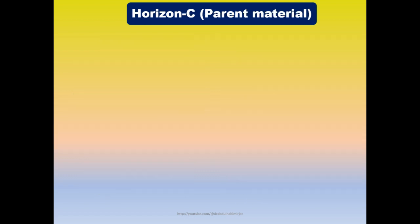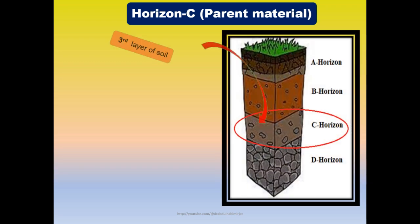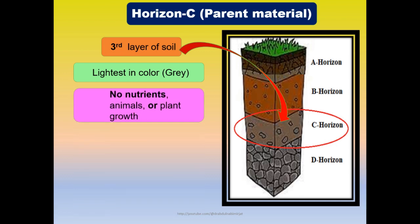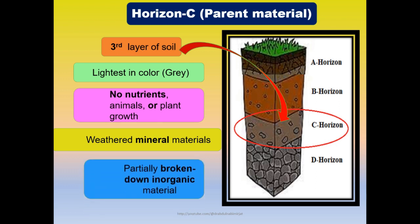Horizon C is also called parent material. It is the third layer of soil. It is the lightest in color. There are no nutrients, animals, or plant growth. Weathered mineral materials are found, and there is partially broken-down organic material.